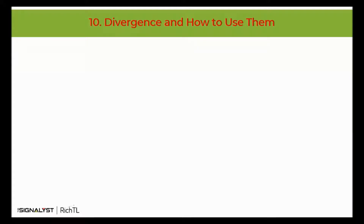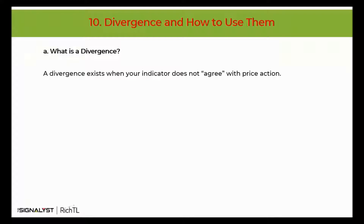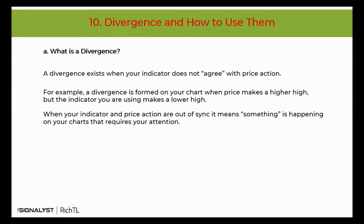Our next tool is going to be divergences. Some traders consider divergences as the holy grail of technical analysis, others consider it useless, while the truth probably lies somewhere in between. So what is a divergence? A divergence exists when your indicator does not agree with price action. For example, a divergence is formed on your chart when price makes a higher high but the indicator you are using makes a lower high. When your indicator and price action are out of sync, it means something is happening on your charts that requires your attention.